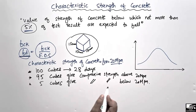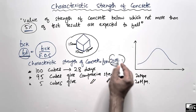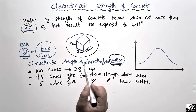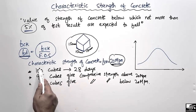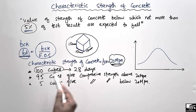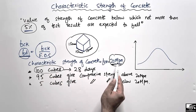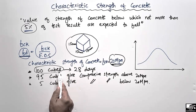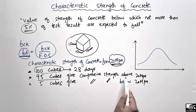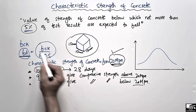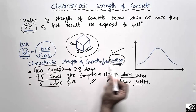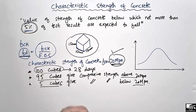That was just an example to clarify the concept. The characteristic strength is the value of concrete strength below which only five percent of results fall. Since we took 100 cubes representing 100 percent, a characteristic strength of 20 megapascal means 95 cubes give compressive strength above 20 megapascal and only five percent give strength below 20 megapascal.